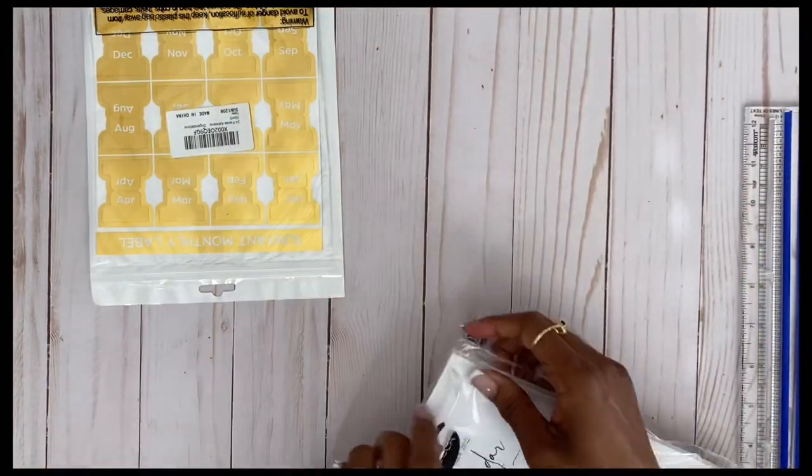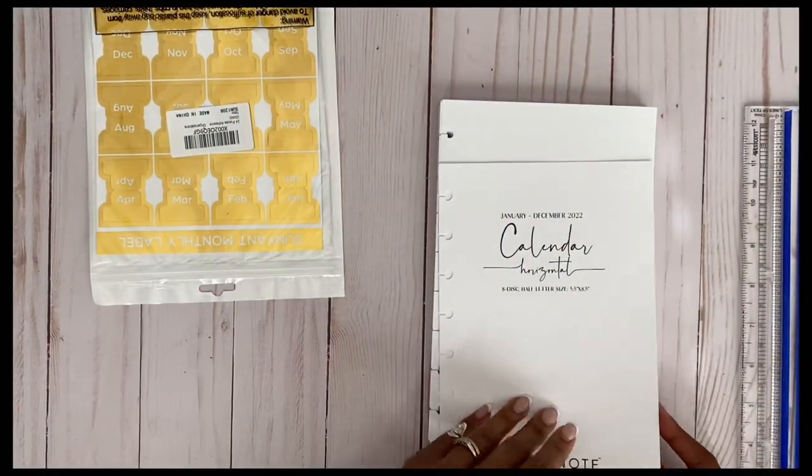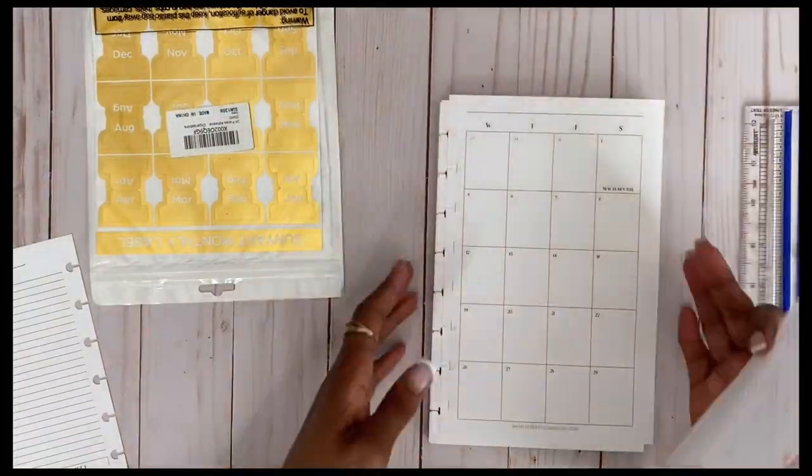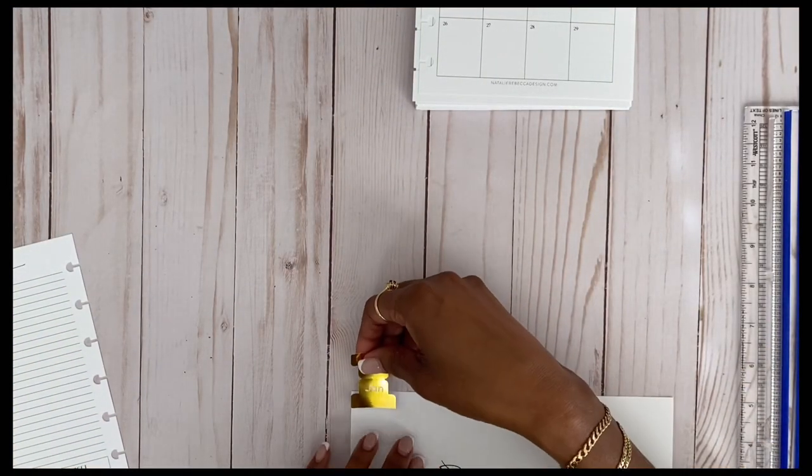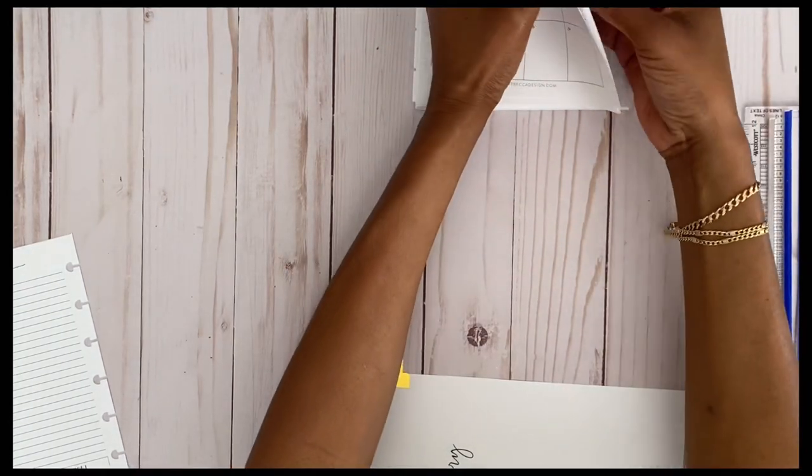I picked up these planner inserts on Amazon by Better Notes. I'll be sure to link them in the cards below. Now I'm just going to add the month dividers on here, and that way it'll make it easier to get to the months.